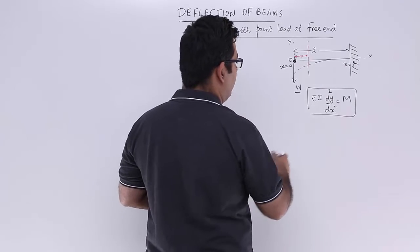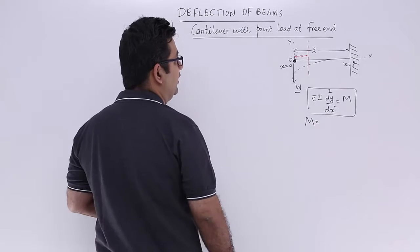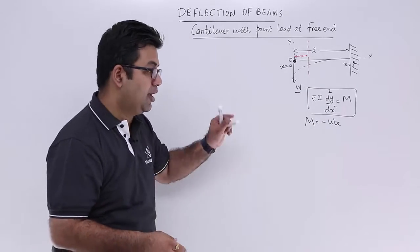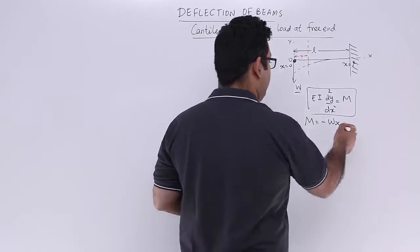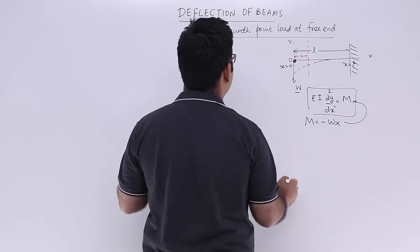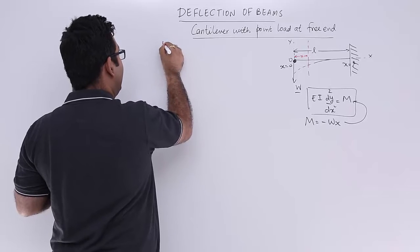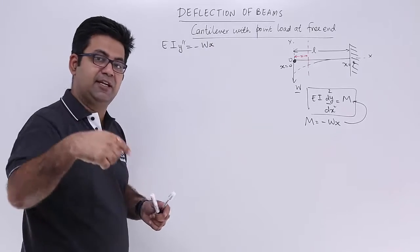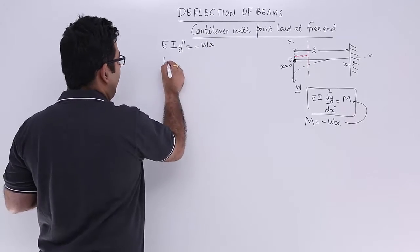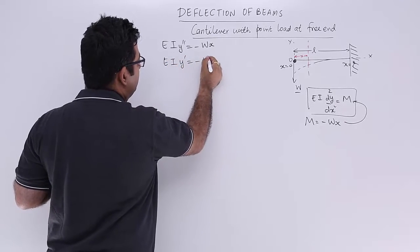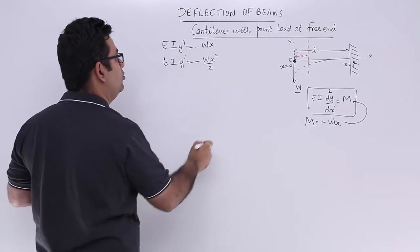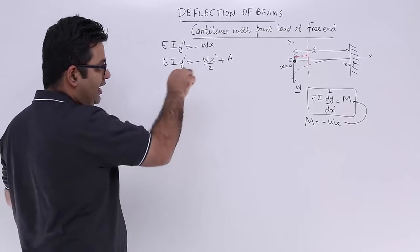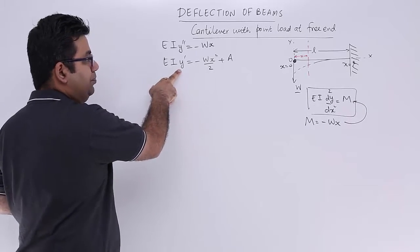The bending moment at section x is equal to minus Wx — negative because this is hogging, and hogging gives a negative moment. Substituting into the expression, we get EI times y double-dash equals minus Wx. Integrating once, we get EI times y-dash equals minus Wx² by 2 plus a constant of integration A, where y-dash is the slope.